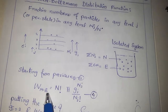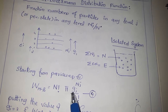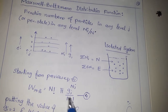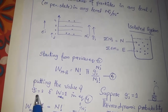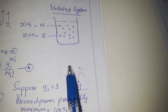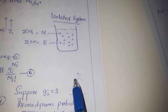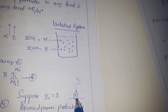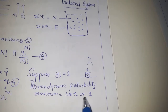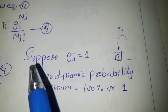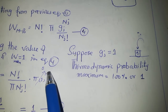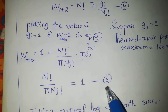Starting from equation 4, this is the Maxwell-Boltzmann probability: N factorial times the product of gj to the power nj divided by nj factorial. Putting in the value gj equal to 1 — supposing we have only one energy state — all particles will be occupied in that one energy state, so there is a 100% probability that all particles occupy it. The thermodynamic probability will be maximum, equal to 1. Putting gj = 1 and maximum thermodynamic probability into equation 4, this term equals 1, giving us equation 5.